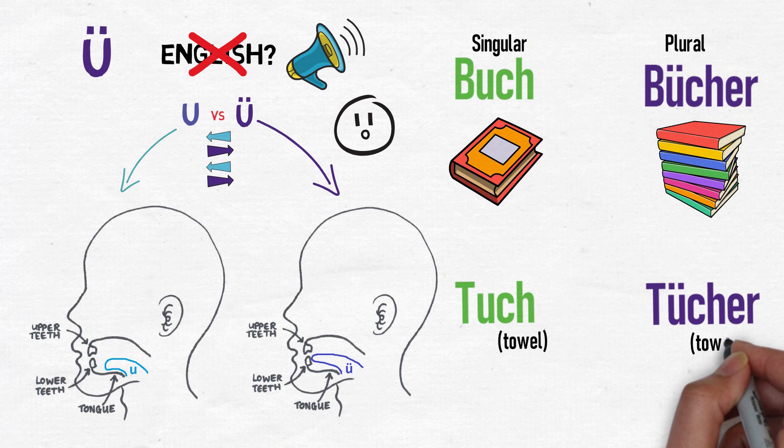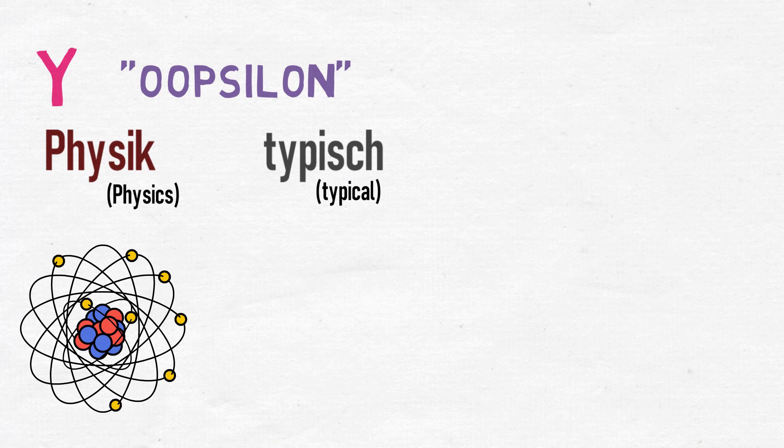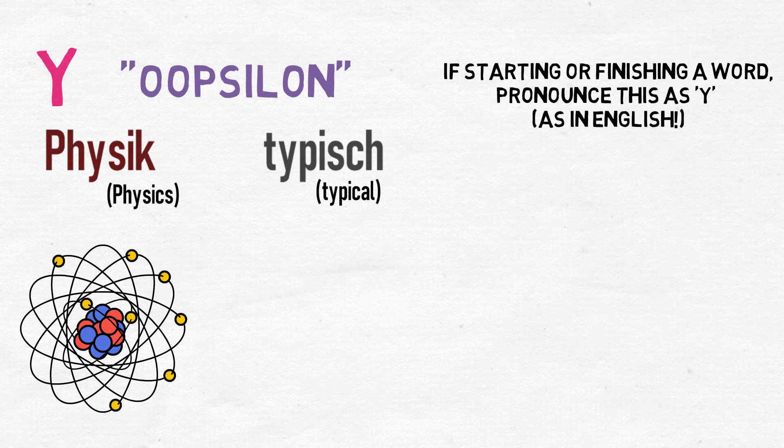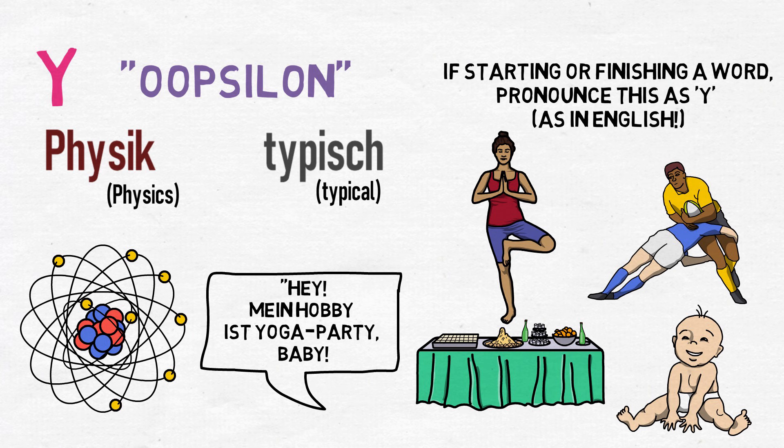Sometimes the letter Y, called Ypsilon in German, can be used as a vowel, making a Ü sound — for example, Physik or typisch, meaning physics or typical. However, if it starts or finishes a word, it would likely be a Y sound like in English — for example, Yoga, Hobby, Party, Baby. The letter Y is rare in German and is worth ten points in German Scrabble, whereas Z is only worth three.